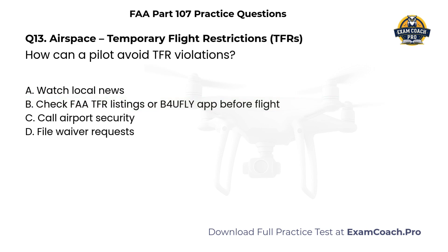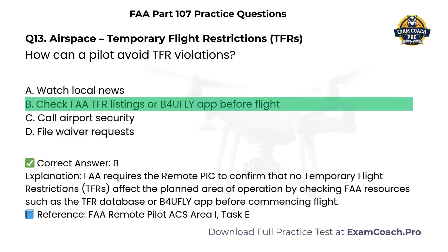Airspace. Temporary flight restrictions. How can a pilot avoid TFR violations? A. Watch local news. B. Check FAA TFR listings or the Before You Fly app before flight. C. Call airport security. D. File waiver requests. Correct answer: B. The FAA requires the remote PIC to confirm that no temporary flight restrictions affect the planned area of operation by checking FAA resources such as the TFR database or Before You Fly app before commencing flight.